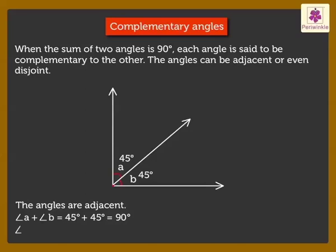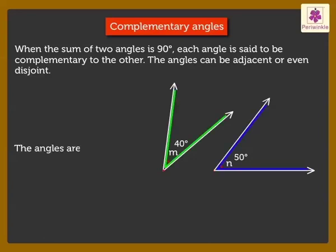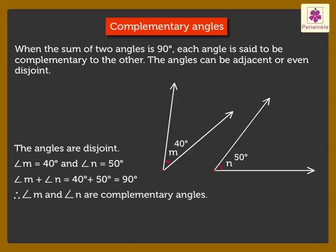Hence, we say Angle A and Angle B are complementary angles. Now look at figure 2 — here, the angles are disjoint. Angle M is equal to 40 degrees and Angle N is equal to 50 degrees. On adding their measures, we get the sum as 90 degrees. Hence, we say Angles M and N are complementary angles.